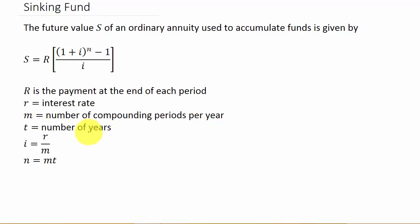And then T is the number of years. The reason we need the R, the M, and the T is to get I and N, which you see that's in the formula. So I is R over M, N is M times T. So why do I have future value of an ordinary annuity here instead of the sinking fund formula?